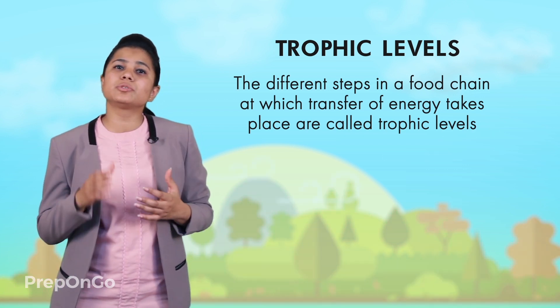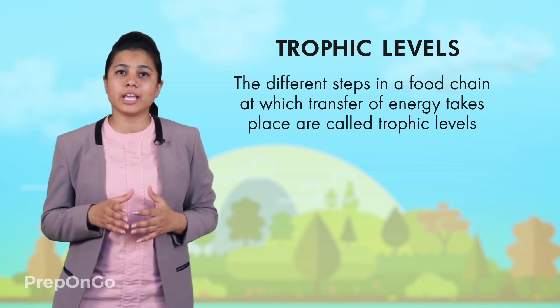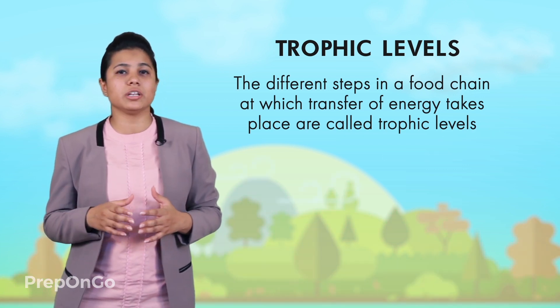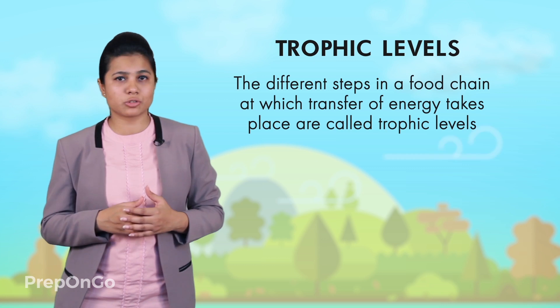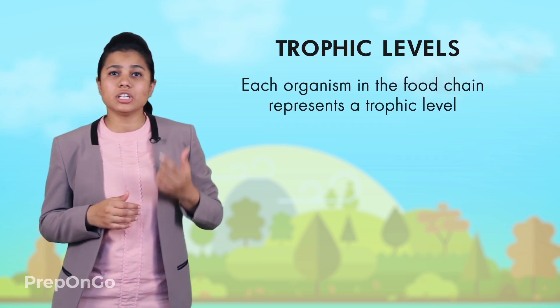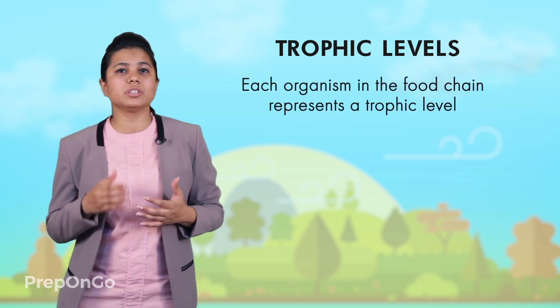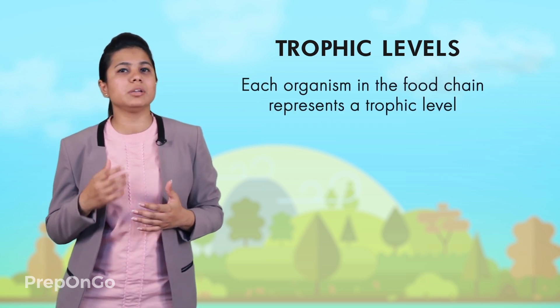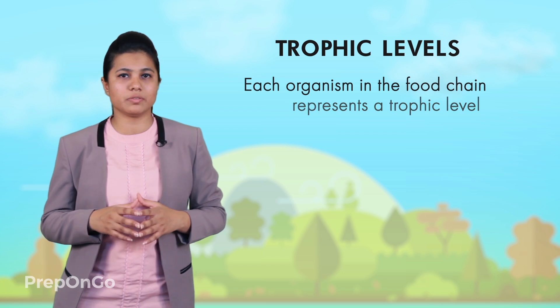These groups form different steps in the food chain and are called trophic levels. In other words, each organism in the food chain represents a trophic level.